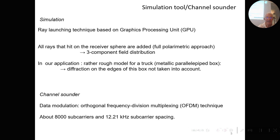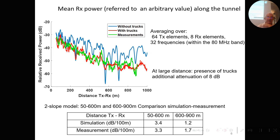The channel sounder uses an OFDM-based modulation with the OFDM technique, with about 8,000 sub-carriers and a sub-carrier spacing of 12 kHz. The curves represent the mean received power referred to an arbitrary value along the tunnel — either in an empty tunnel or with trucks. The blue and red curves are theoretical results, and the green curve is the measurement in the presence of trucks. There is rather good agreement between theory and experiment.